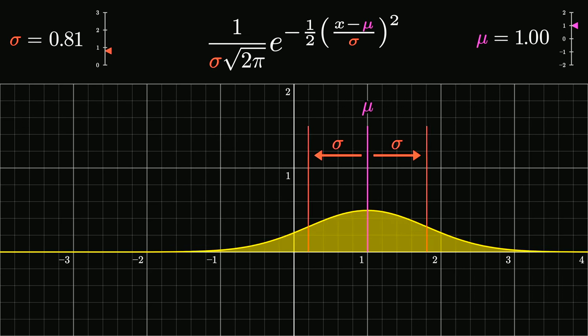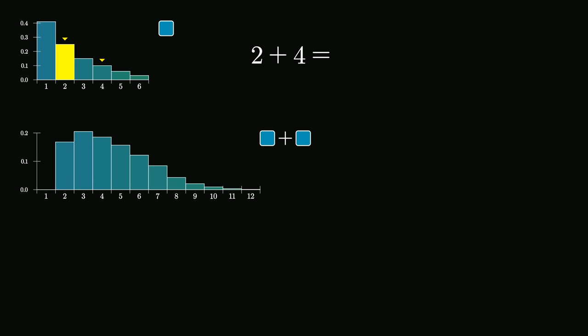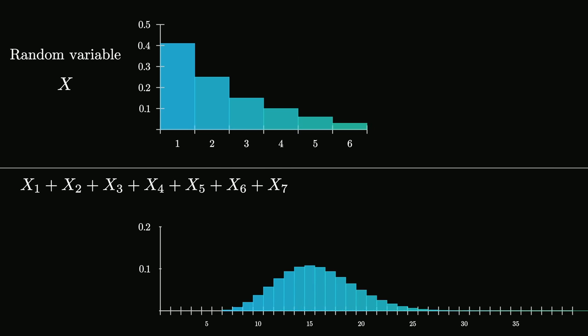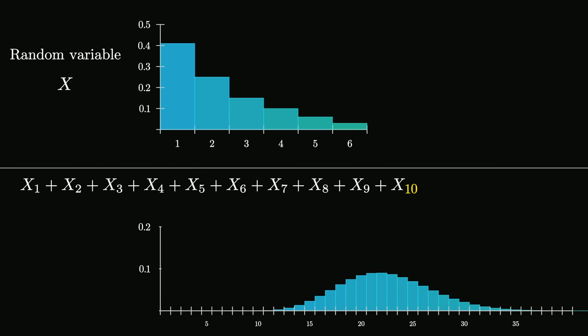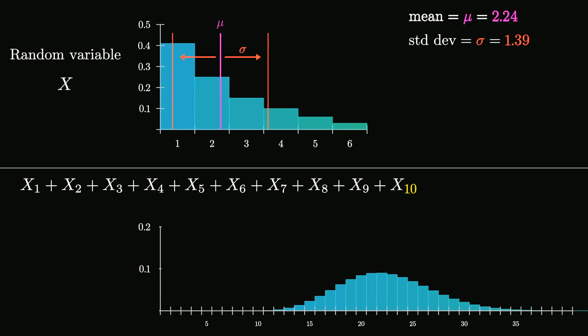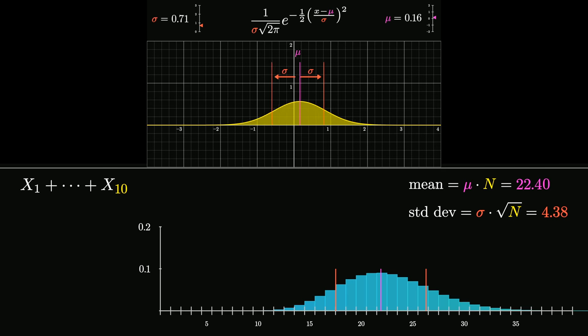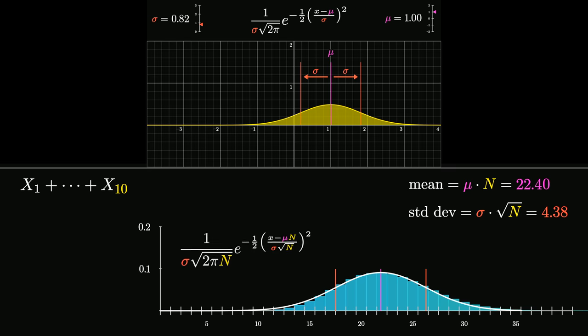Now that all of that is on the table, let's look back again at the idea of starting with some random variable and asking what the distributions for sums of that variable look like. As we've already gone over, when you increase the size of that sum, the resulting distribution will shift according to a growing mean and slowly spread out according to a growing standard deviation. Putting some actual formulas to it: if we know the mean of our underlying random variable and call it mu, and we know its standard deviation and call it sigma, then the mean for the sum will be mu times the size of the sum, and the standard deviation will be sigma times the square root of that size.